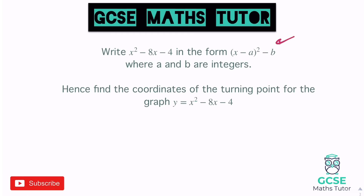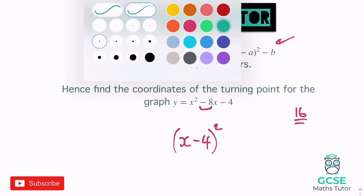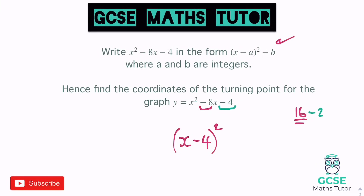We're going to do exactly the same thing. This time it's minus eight, so when I halve that it'll be minus four in the bracket: (x − 4)², and a is four. Expanding the double bracket, negative four times negative four gives us 16. We don't want 16, we want negative four, so we subtract 20. That gives us minus 20 at the end, so b is 20. For the turning point, we flip the sign on minus four, so the x coordinate is positive four and the y coordinate is minus 20.